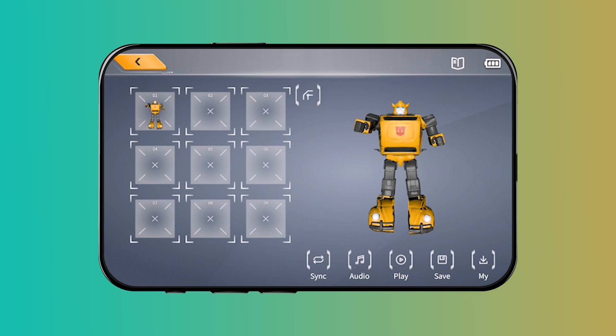After the second action is ready, click sync and then click the second grid to record it. Repeat this process, design and store each action in sequence.